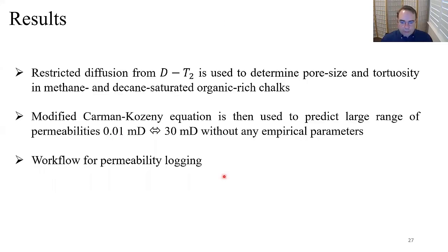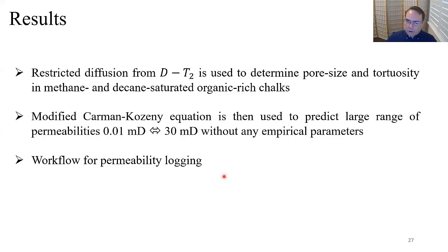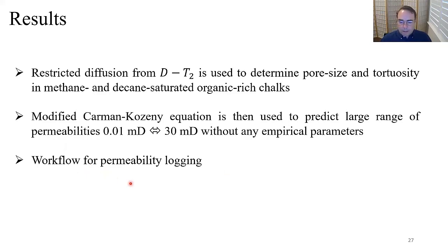In summary: restricted diffusion from DT2 is used to determine pore size and tortuosity in methane- and decane-saturated organic-rich chalks. We use the modified Carman-Kozeny equation to predict permeability over a large range from 0.01 to 30 millidarcy without any empirical parameters, and we develop a workflow to generate a permeability log from NMR. I now hand over to Gabriella, who will discuss surface roughness and pore size from diffusion-T2.